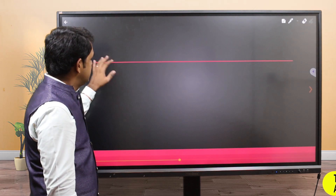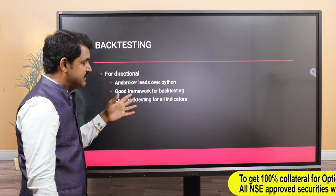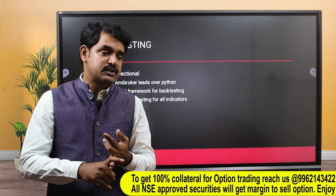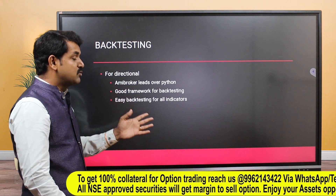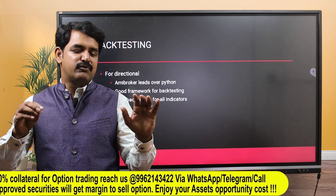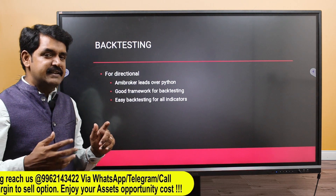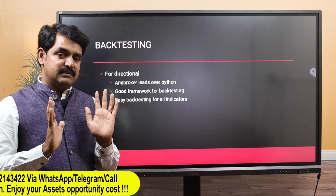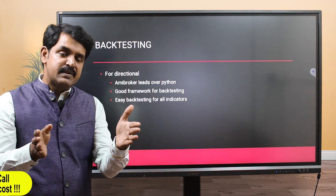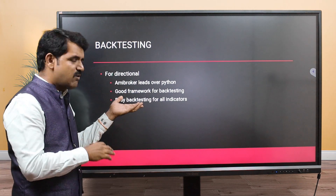For backtesting, there are two scenarios. For directional strategies - price action for futures or cash market using moving averages, MACD, or OHLC - AmiBoker is best. It has a good backtesting framework; you don't need to develop any framework yourself. You just provide the buy and sell signals and it gives all the details. It is much faster than Python, and it handles all parameters like time intervals, Sharpe ratio, drawdown, and R-ratio.